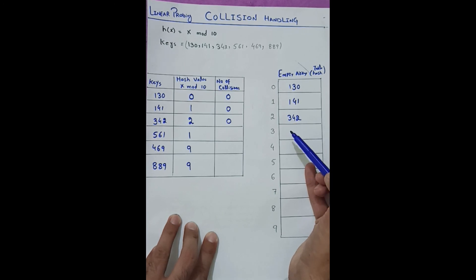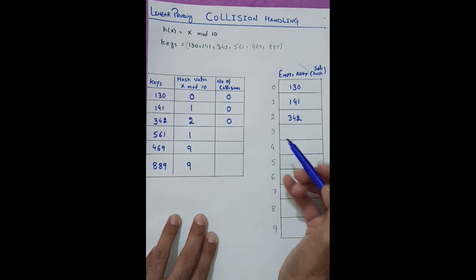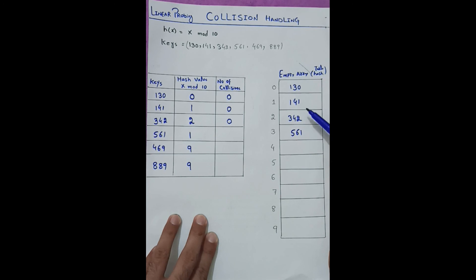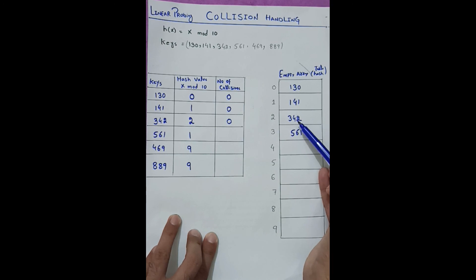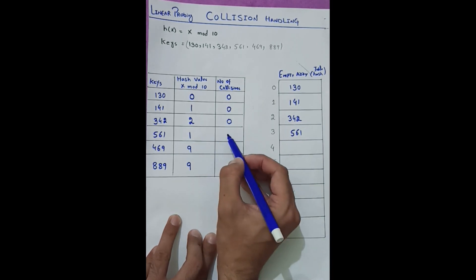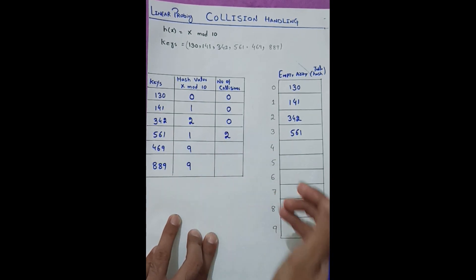We check index 3, which is empty, so we place 561 there. Two collisions occurred for 561: index 1 was not empty (increment by 1), index 2 was also not empty (increment again), and finally index 3 was empty. So the number of collisions for placing 561 is 2.